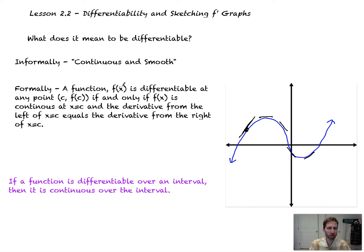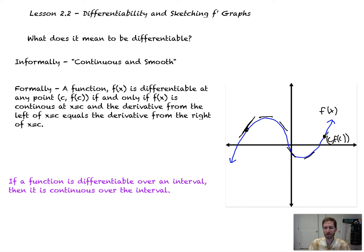Formally — and this one's kind of heavy — a function f(x) is differentiable at any point c, meaning pick a random point, call it c comma f(c), an x value and a y value, if and only if f(x) is continuous at c — the limit exists at that point, the function exists at that point, and they're equal. And the derivative from the left of that value is equal to the derivative from the right, meaning the tangent line coming from the left and from the right is nice and smooth — you get the same slope from either side.